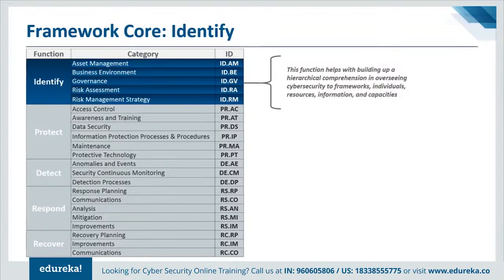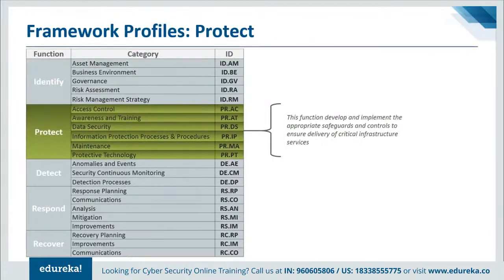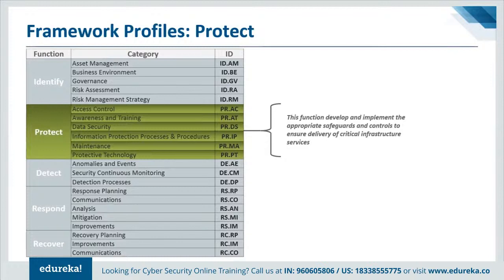The next function is Protect, which develops and implements appropriate safeguards to ensure delivery of critical services. The Protect function supports the ability to limit or contain the impact of a potential cybersecurity event. Examples of outcome categories within this function include identity management and access control, awareness and training, data security, information protection processes and procedures, maintenance, and protective technology.